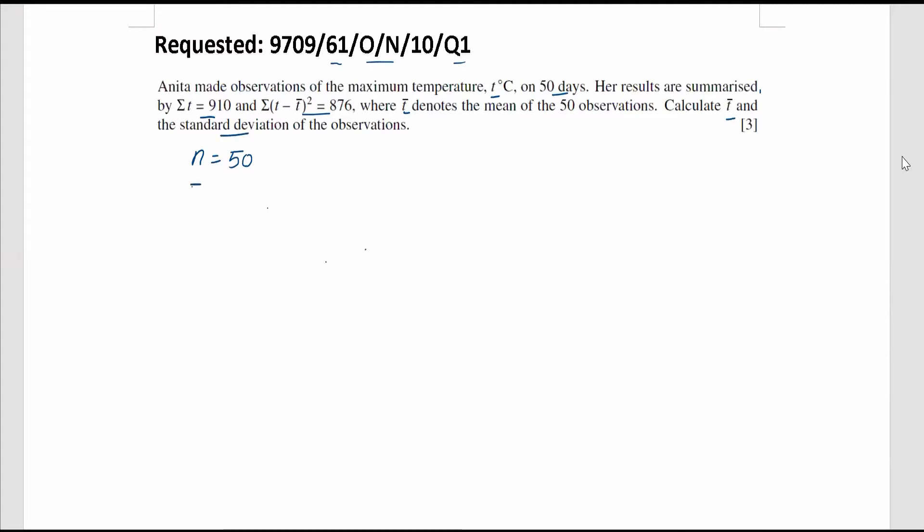First, we write down the info: summation T equals 910, and T minus T bar bracket square, sum up all the value, which is equal to 876.